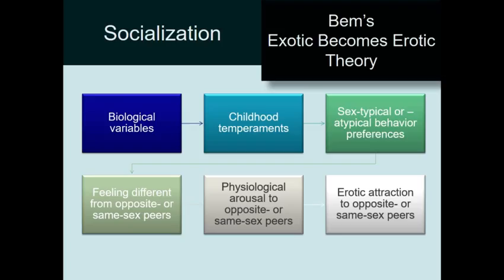We develop an erotic attraction to the people we feel different from and are physiologically aroused by. It's considered a socialization theory because the component of whether behavior is sex-typical or atypical comes from socialization - the feedback we get from other people, like 'boys shouldn't be crying' or 'girls don't climb trees.' We internalize those messages, and that combined with what we like doing comes together to determine who we find arousing.